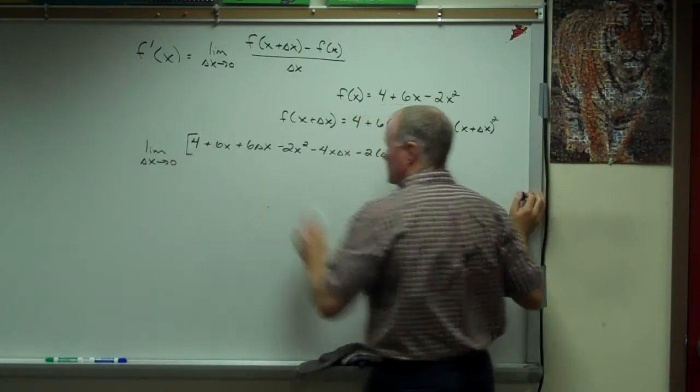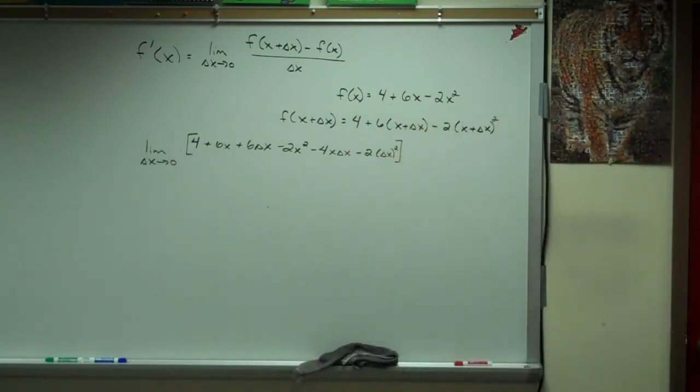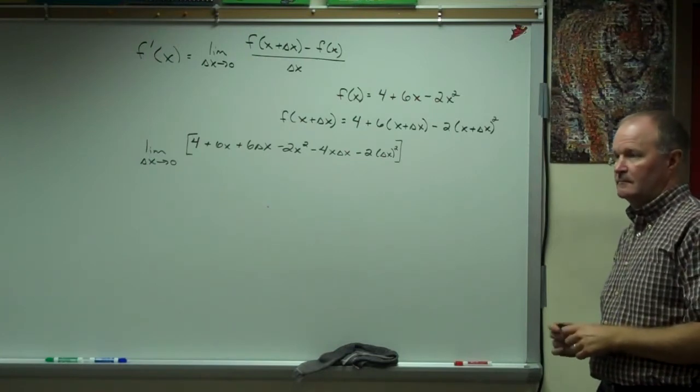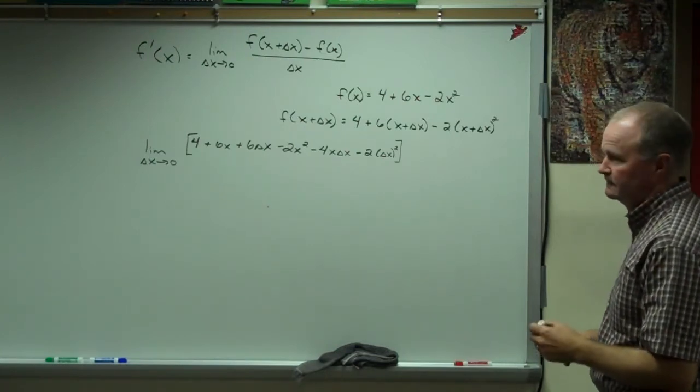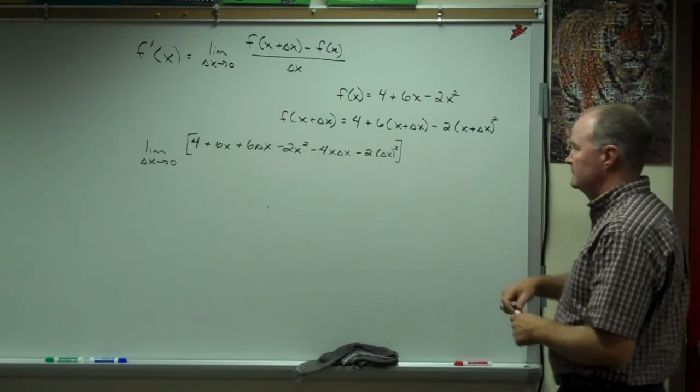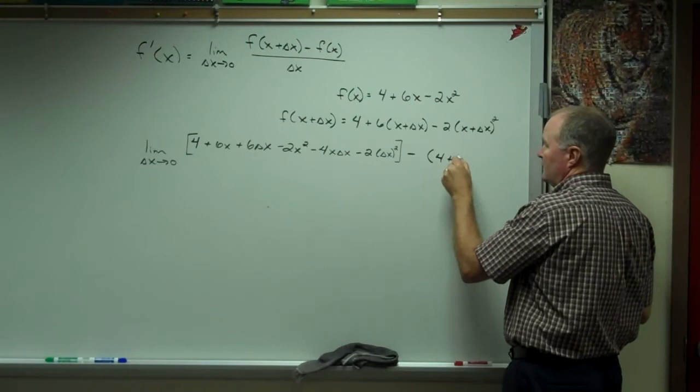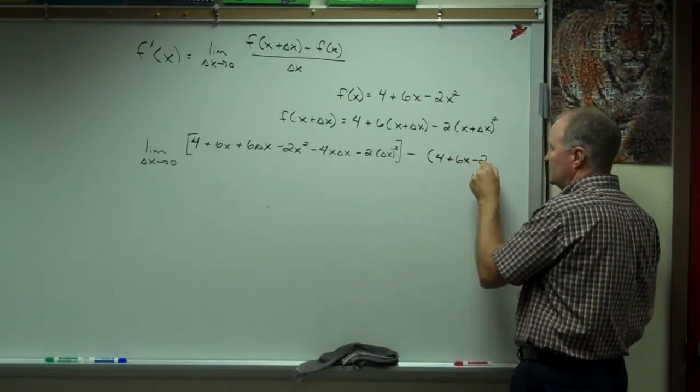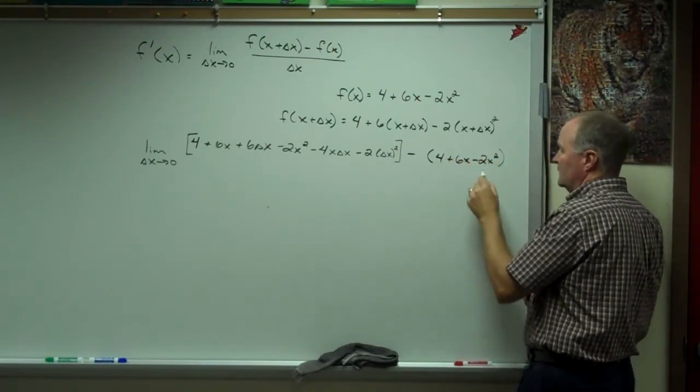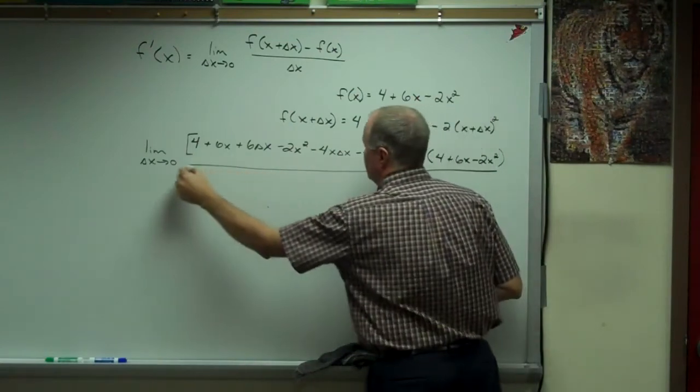That whole thing right there is just f of x plus delta x. Then I've got to subtract off f of x. And don't forget our little friend delta x.